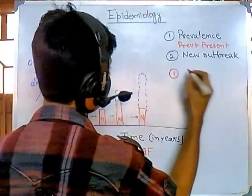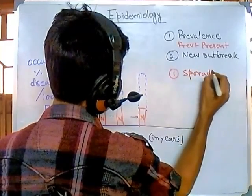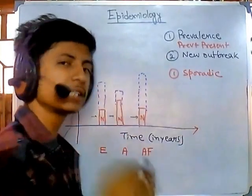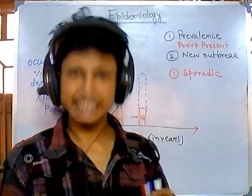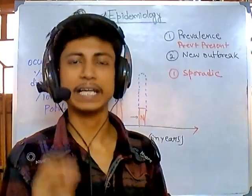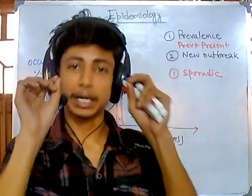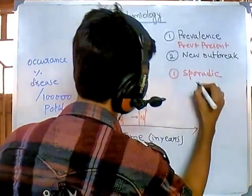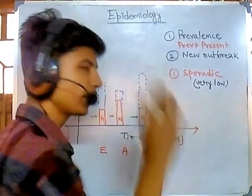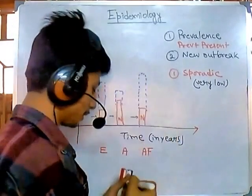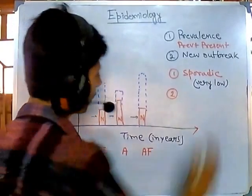Now let's talk about three major terminologies. First is sporadic. A sporadic disease is one that occurs in a particular area but at very low levels — a particular type of disease is seen among a population but it is very infrequent. It is fixed in a particular area, not spreading from one continent to another. Prevalence is very low and outbreak is also very low, so we don't feel too threatened by a sporadic disease.